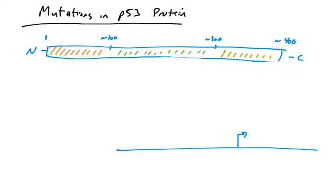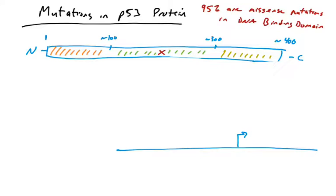Now let's look at how mutations affect p53's ability to function as a transcription factor. Most mutations that occur in the p53 gene are missense mutations, also known as point mutations, and they're specifically in the DNA binding domain of p53. Just changing one amino acid in the DNA binding domain can have a very profound effect — the protein will not bind DNA properly, and if it doesn't bind DNA, it can't function as a transcription factor.